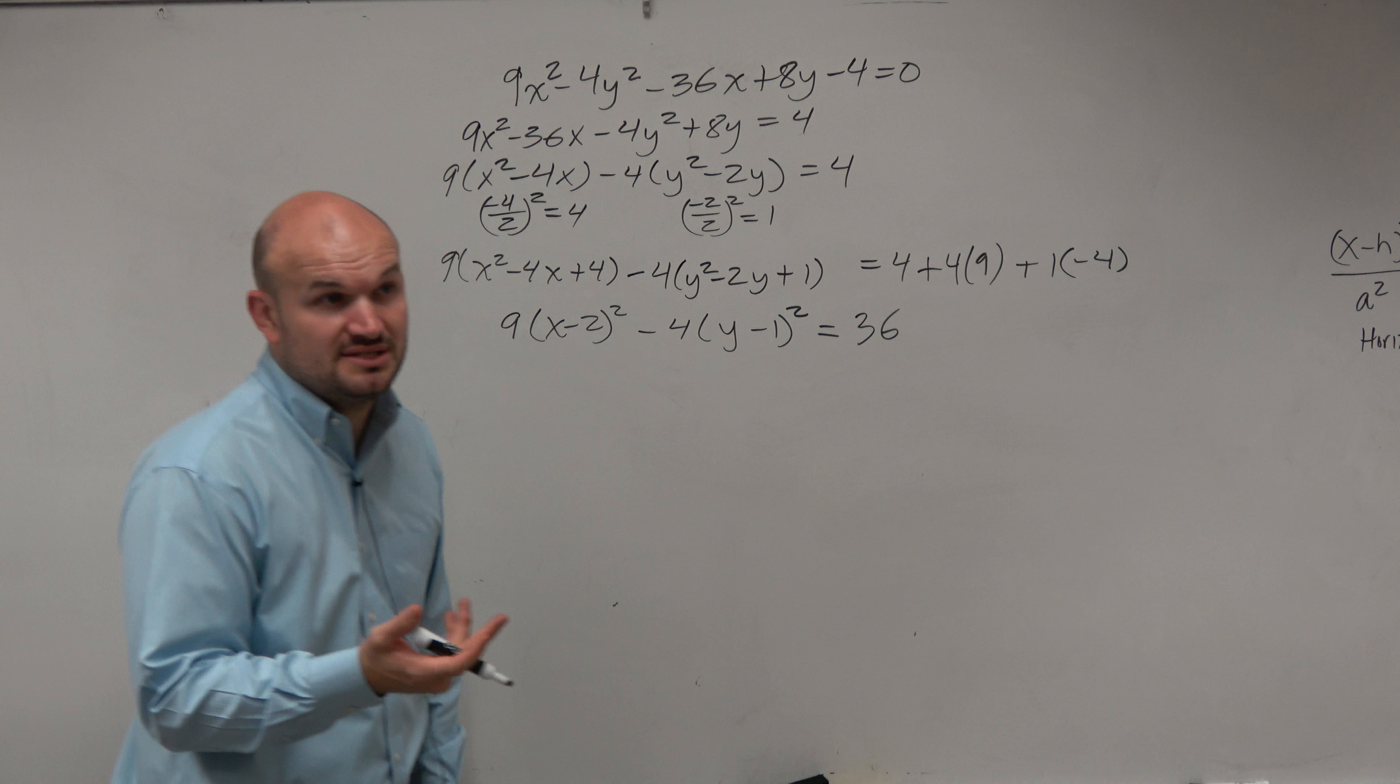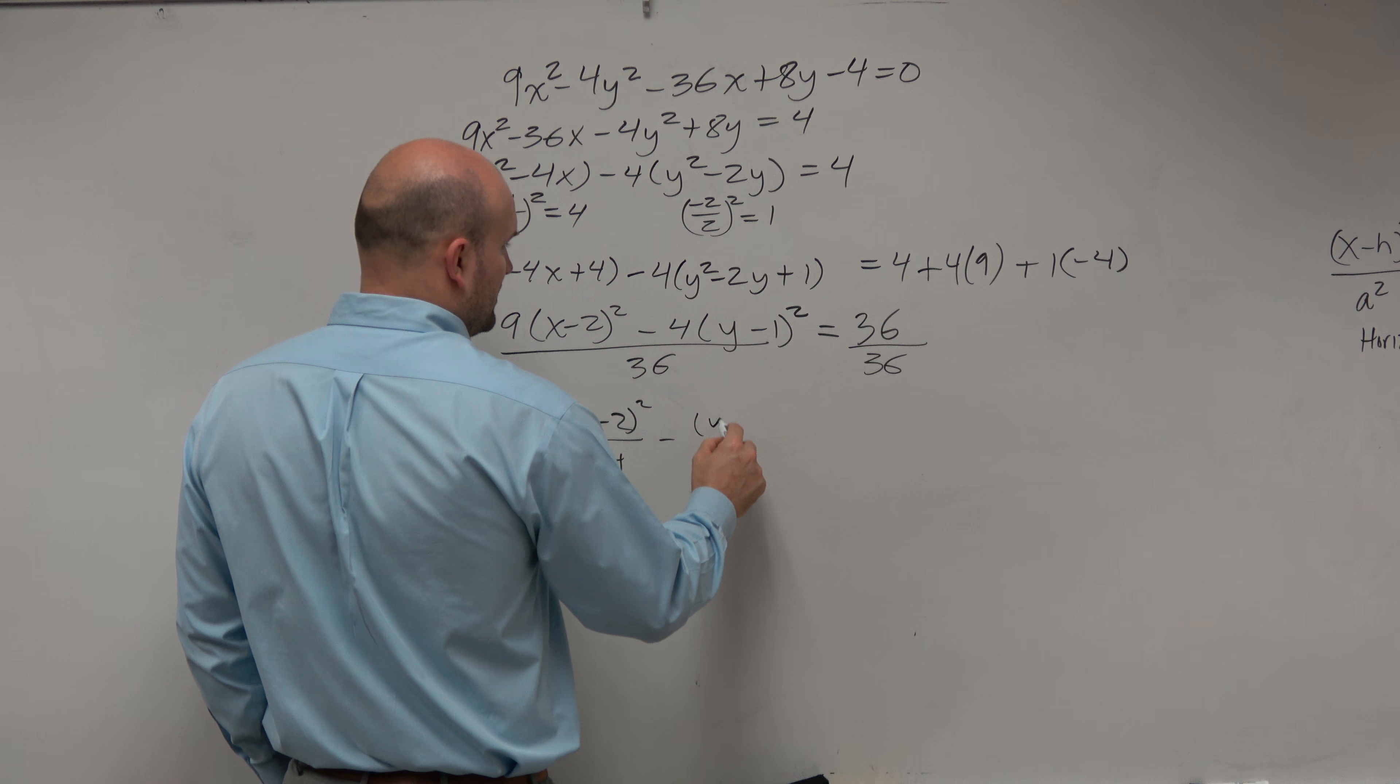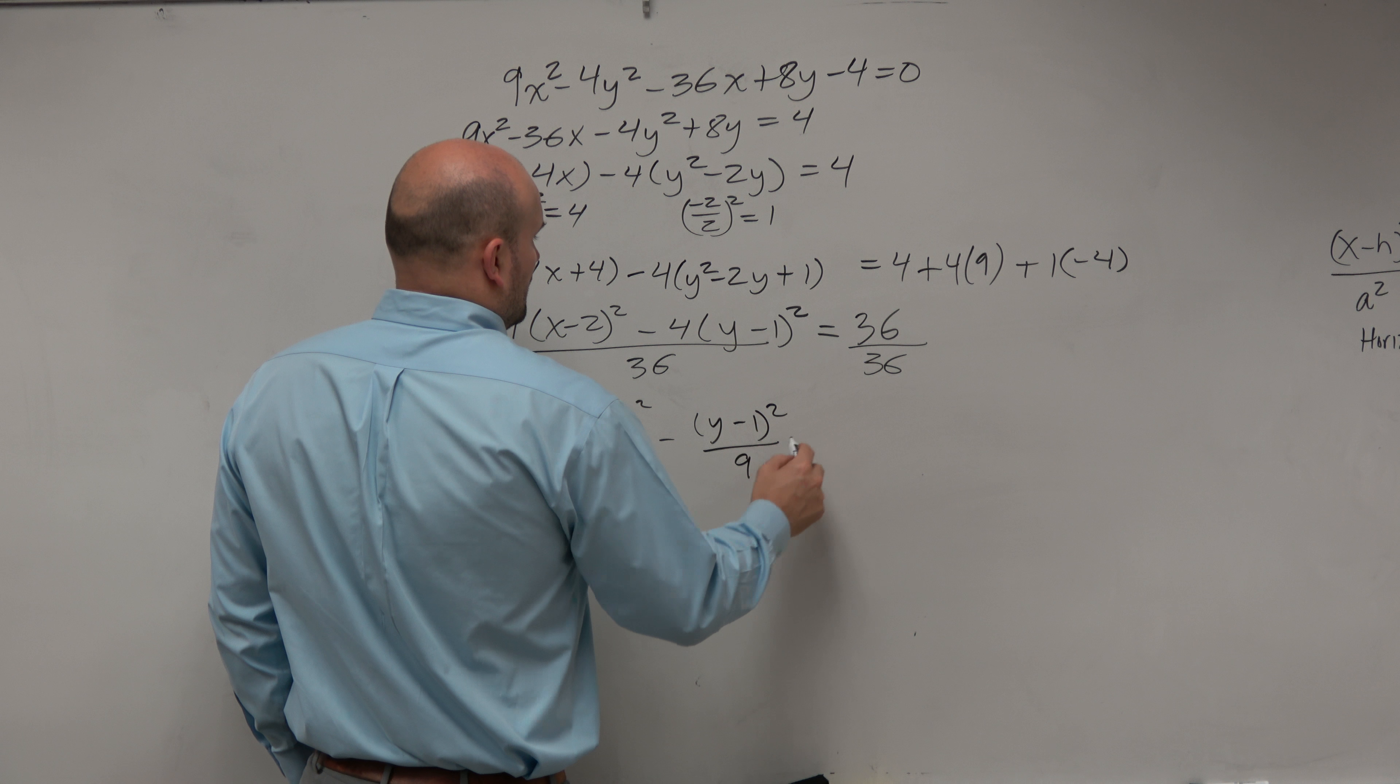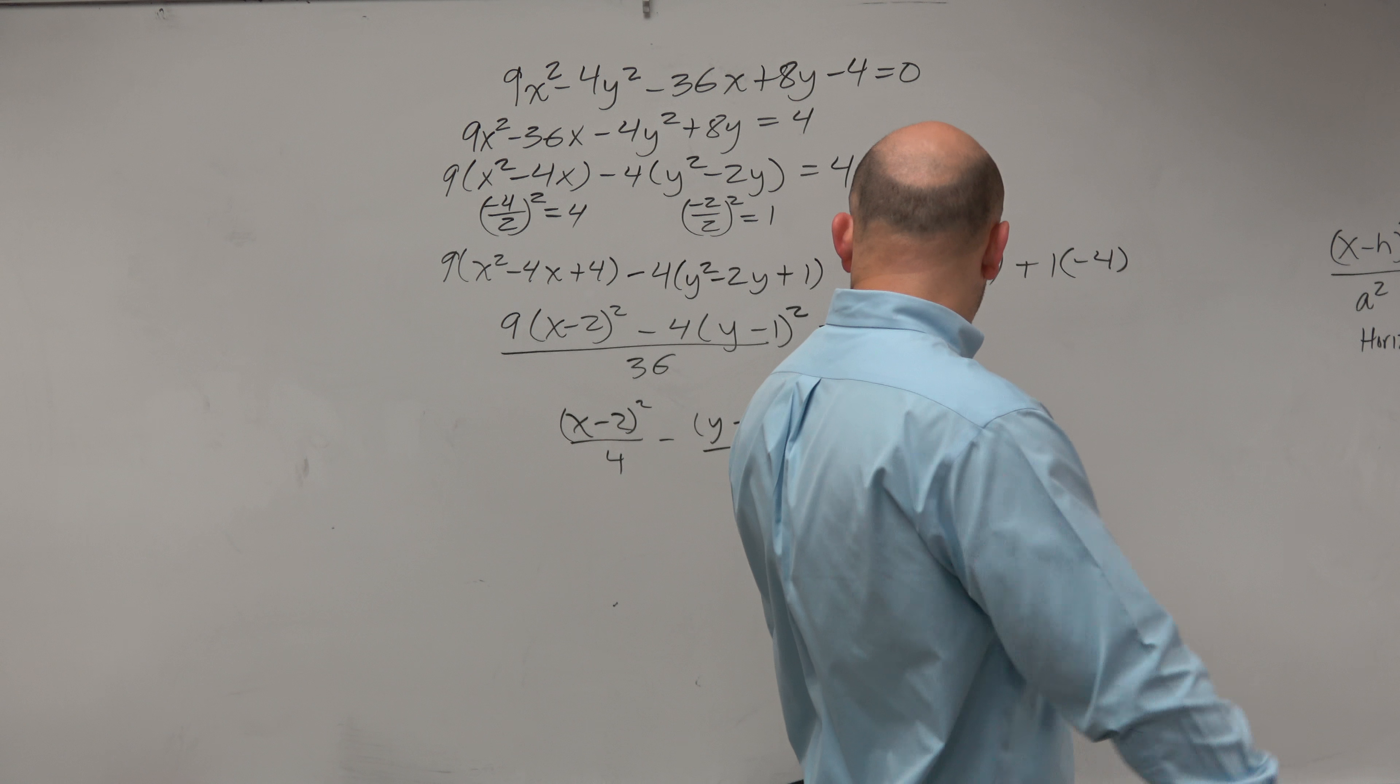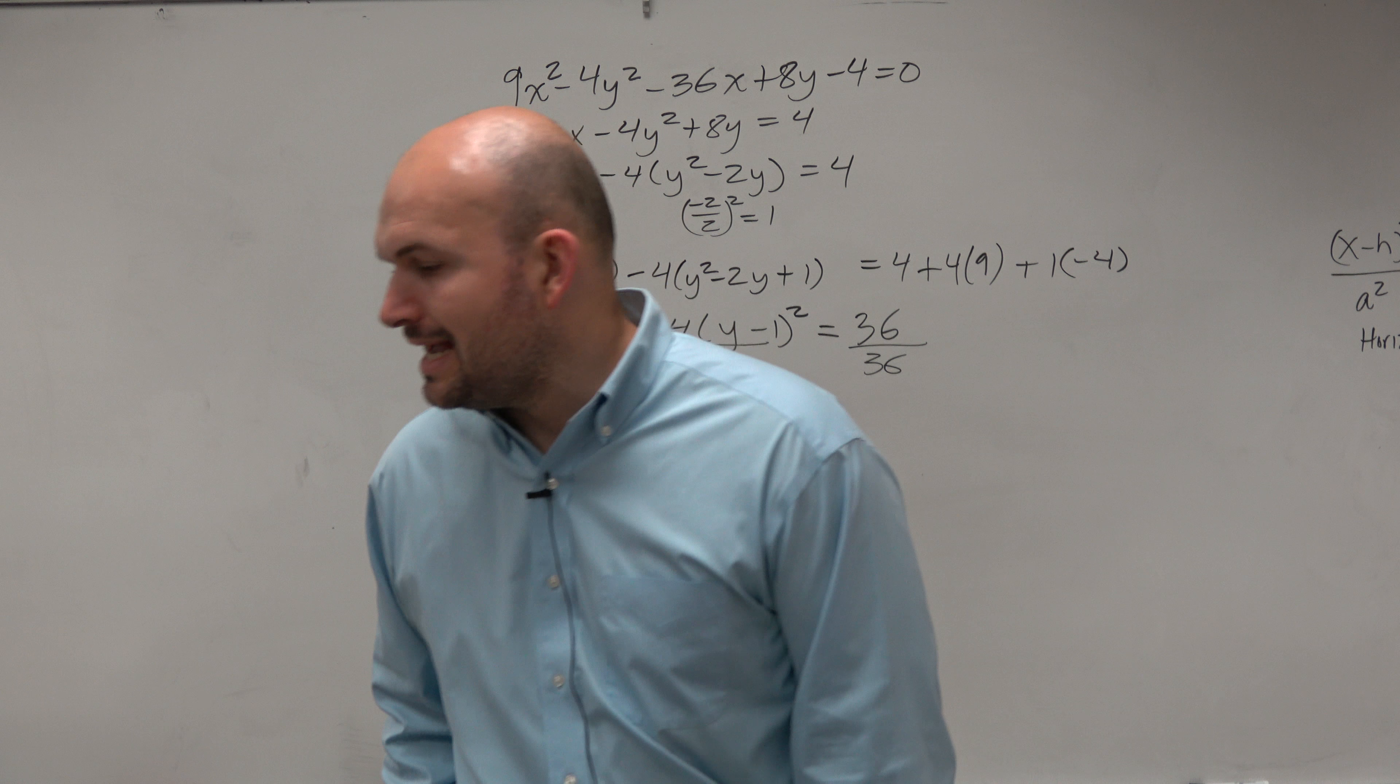At least now in this point, I have created two binomials squared, which I can factor down into x minus 2 squared minus 4 times y minus 1 squared equals, let's do a little math here, 4, negative 4, just goes to 0. 4 times 9 is 36. Now this is kind of like the first problem I did, right? It's almost in standard form. But we want to set it equal to 1. So we divide by 36.